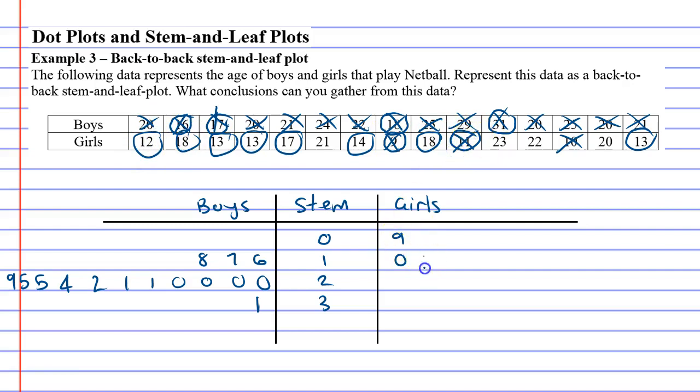I'm going to put the 11 next and then the 12 next. I've got to make sure there's no other 12s here. Yes. Now we've got one, two, three 13 year olds. Okay, this is the age of people playing netball. So there's three 13 year olds playing netball.